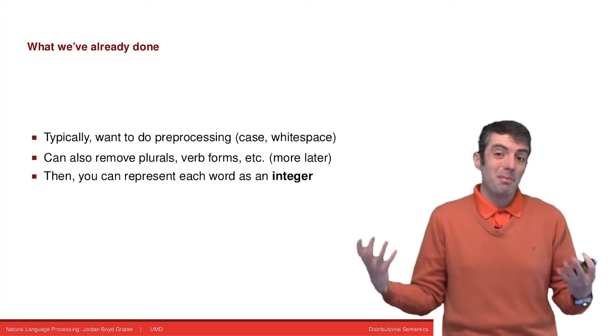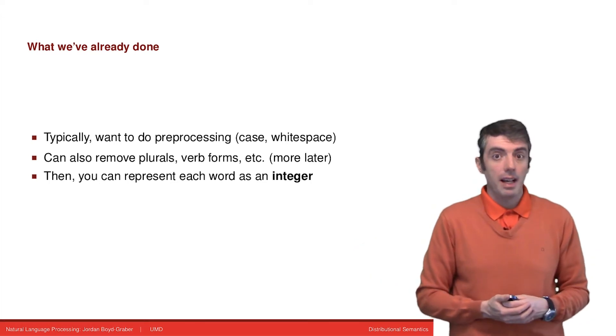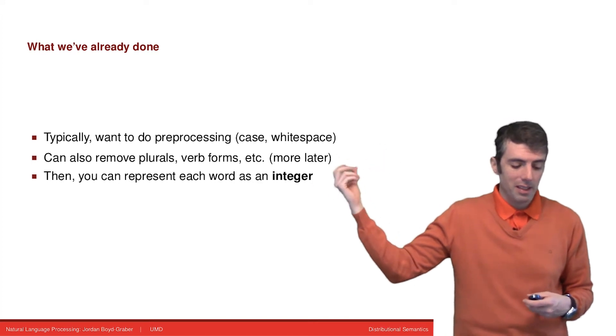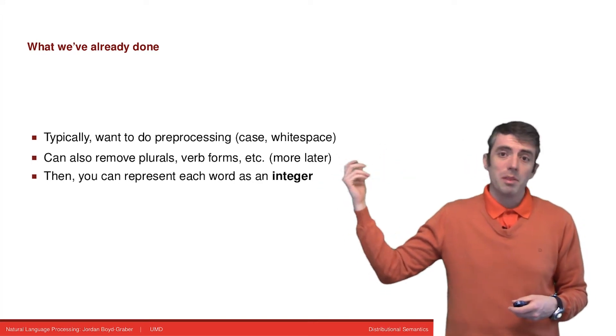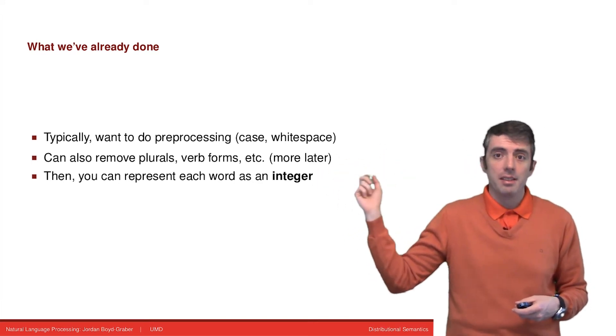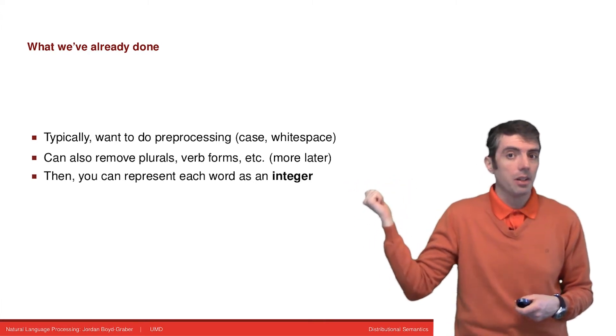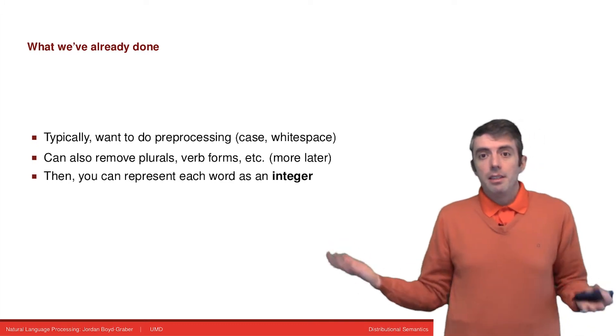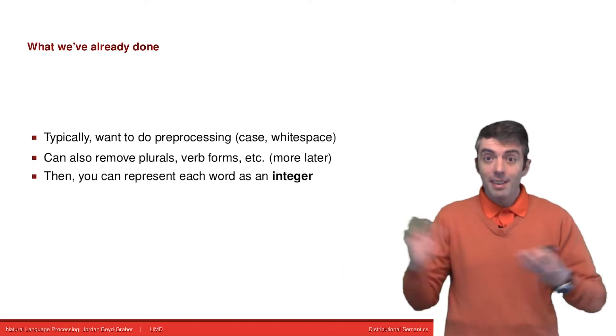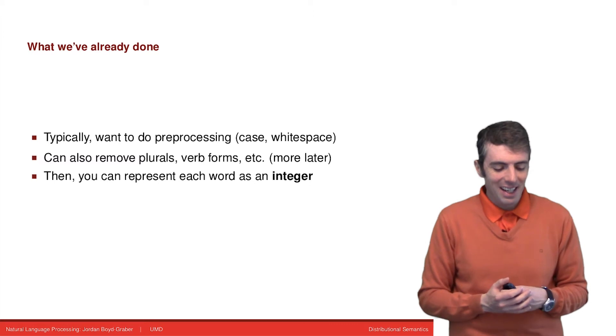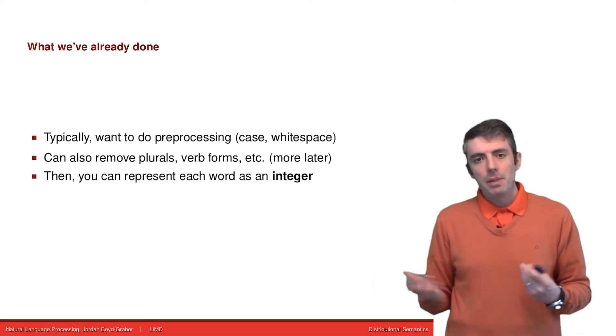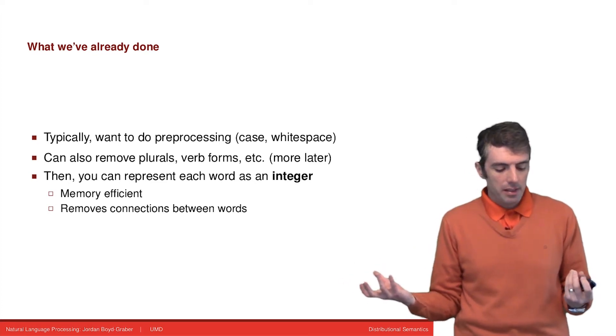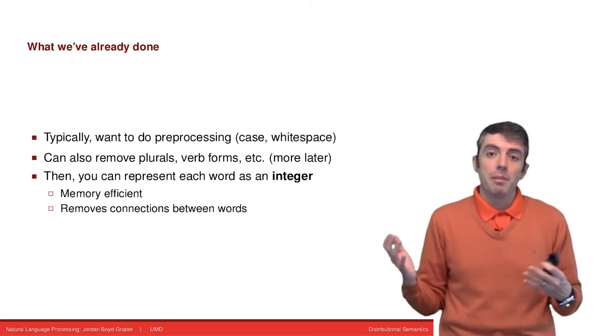So these are questions we've been avoiding thus far in this class. We've been taking some sort of preprocessing where we can do things like remove verb forms and plurals and collapse dogs and dog into a single integer, and then using that as our representation for things like logistic regression. This is a good place to start, but maybe we can do something more.